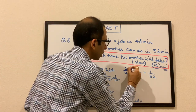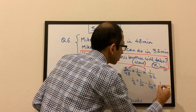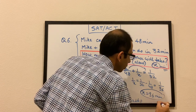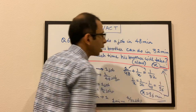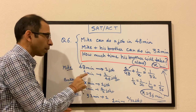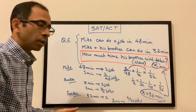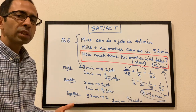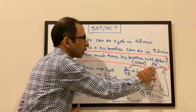Solving: 1/x = 1/32 − 1/48 = 1/96, so x = 96 minutes. His brother would take 96 minutes alone. The approach is to work in rates per unit time: Mike does 1/48 per minute, brother does 1/x per minute, and together 1/32 per minute. Solving gives the brother's time as 96 minutes.